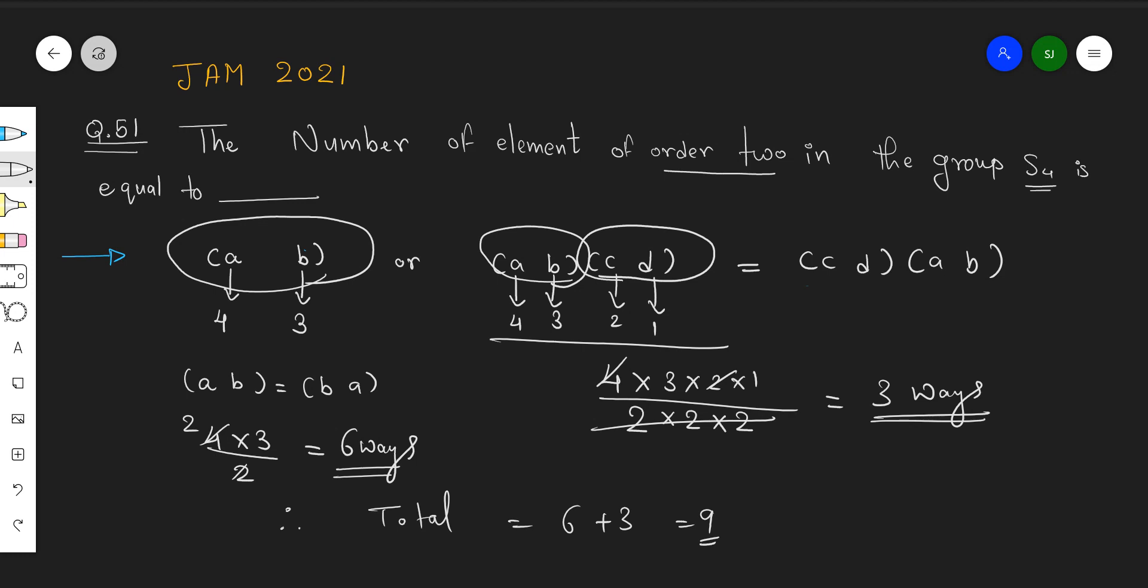Suppose if the question has been asked, find out the number of elements of order 3 in S4. It would be of the type ABC only. Here I will write it could be filled in 4 ways, this can be filled in 3 ways, and this can be filled in 2 ways.